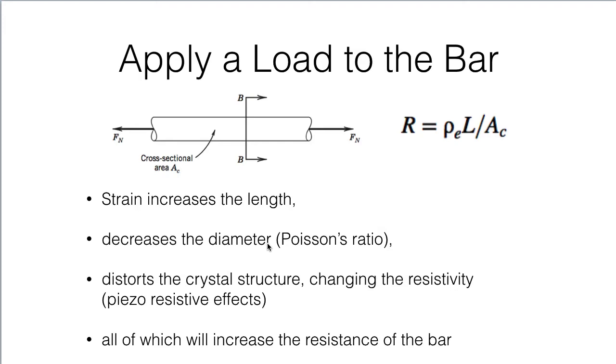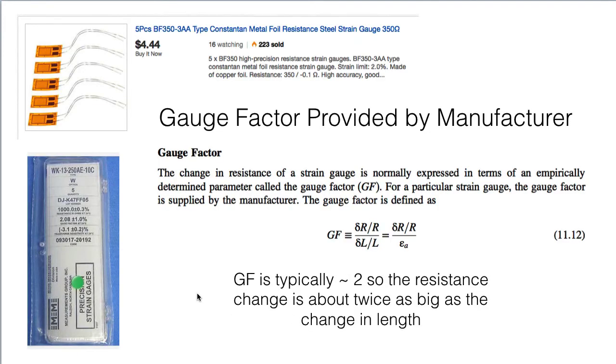The amount that the resistance changes relative to the amount that the length changes is called the gauge factor. And it's provided by the manufacturer. And it's a combination of all three of those effects that we saw. Increase in length, decrease in diameter, and the crystal structure distortion. It's usually right around a factor of two. So 2.08 plus or minus 1% for this particular collection of strain gauges. And that's the ratio between the resistance change and the strain change. So the change in resistance will be typically about twice as big as the change in length.